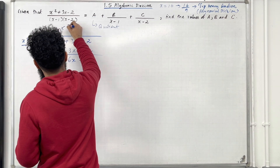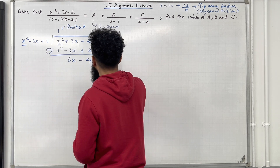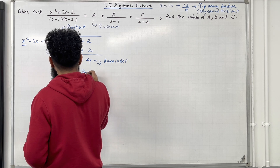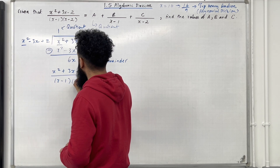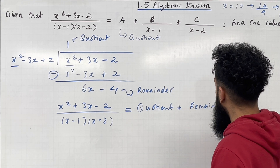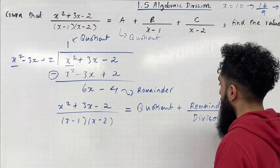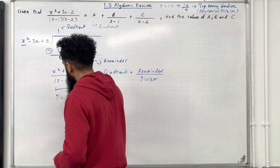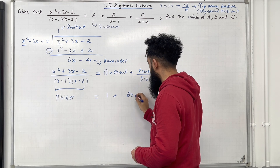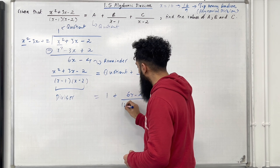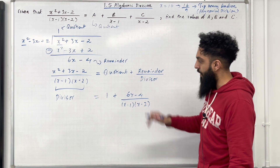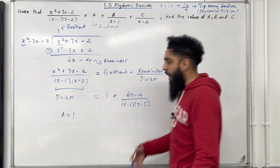The process terminates there. The 1 is called the quotient and the 6x minus 4 is called the remainder. So this fraction — x squared plus 3x minus 2 over x minus 1 multiplied by x minus 2 — equals the quotient plus the remainder over the divisor: 1 plus 6x minus 4 over x minus 1 in brackets multiplied by x minus 2 in brackets. So I've got the a value which is 1.